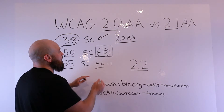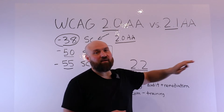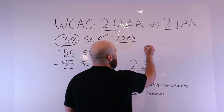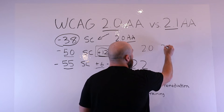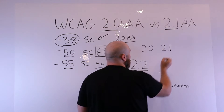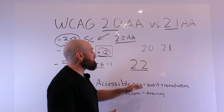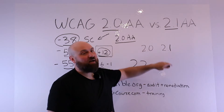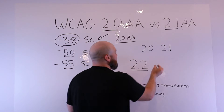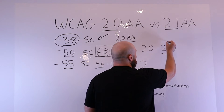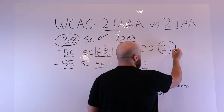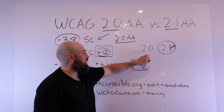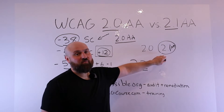That's the difference. And when you are procuring an audit, it's important to know that we can get 2.0 and we can get 2.1, but is the additional cost for 2.1 that much more? Likely not. The reason is because the industry standard has become 2.1 AA, so the price is probably going to be the same.